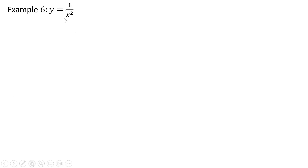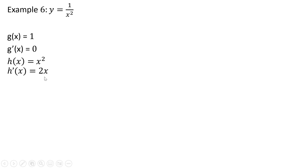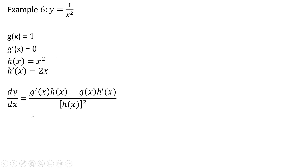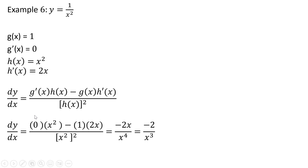Example 6: y equals 1 over x squared. So g of x is 1, and the derivative of 1 — a constant — is just 0. h of x is x squared, and the derivative of x squared is 2x. Here's our rule, and making our appropriate substitutions we get minus 2 divided by x raised to the third power.